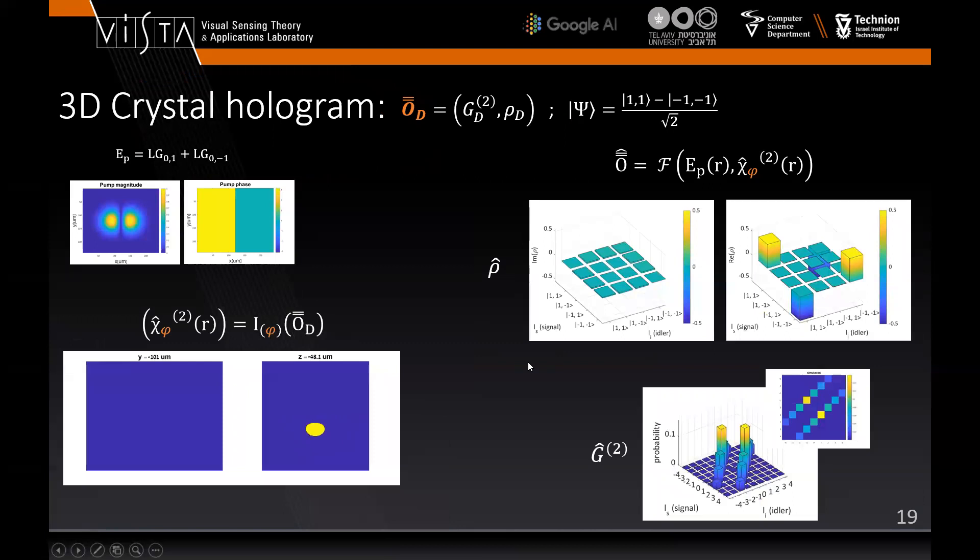Our last example is phase sensitivity of algorithm. We start with learning the 3D crystal hologram that will yield density matrix corresponding with the qubit quantum state specified above. The pump is not learned and is taken to be Laguerre-Gauss 0,1 plus 0,-1. Then we use the learned crystal and the given pump as inputs to the forward model to observe the approximated density matrix.